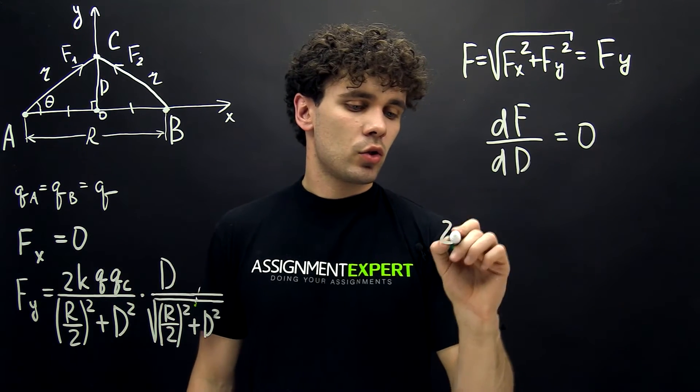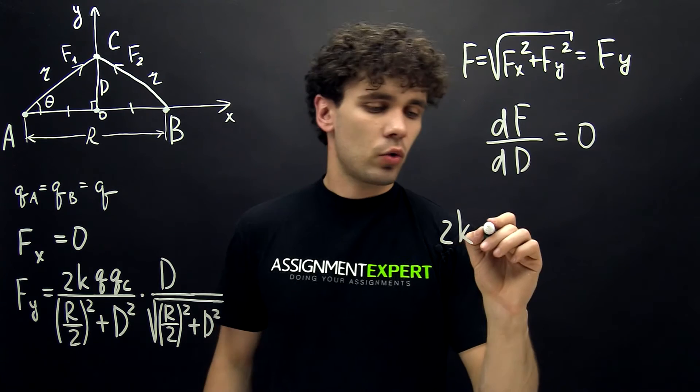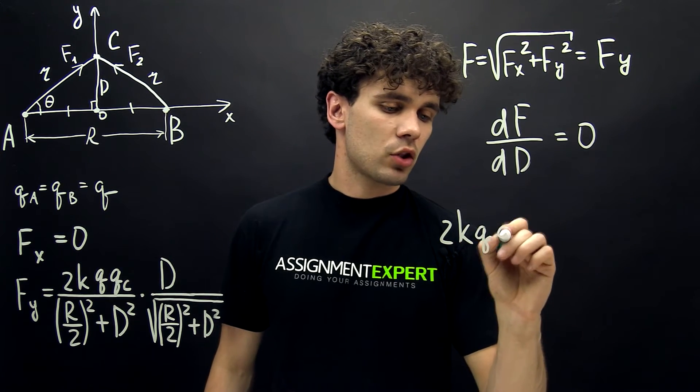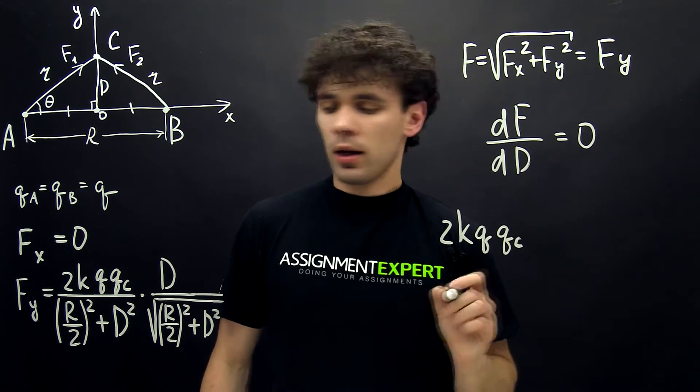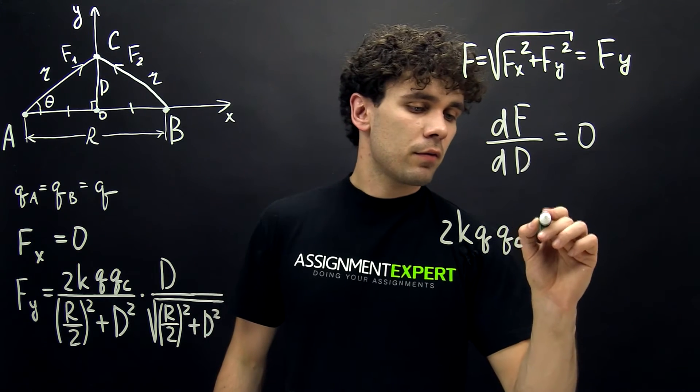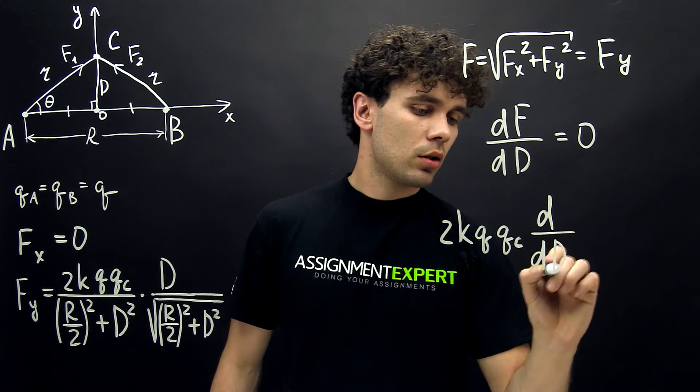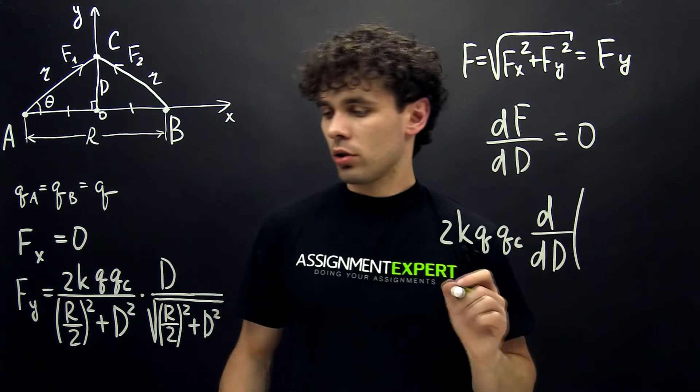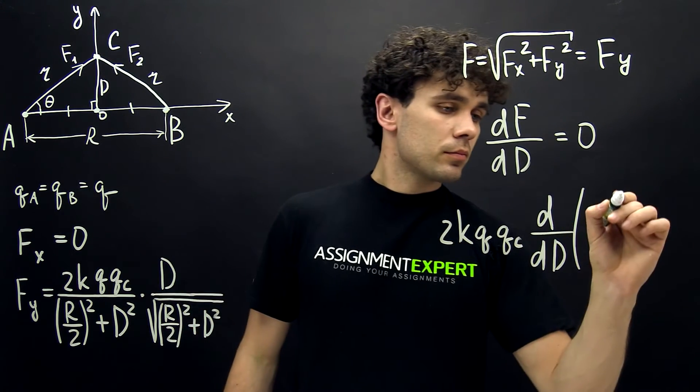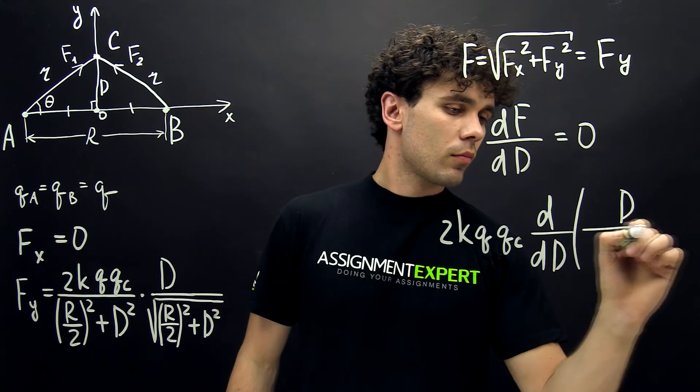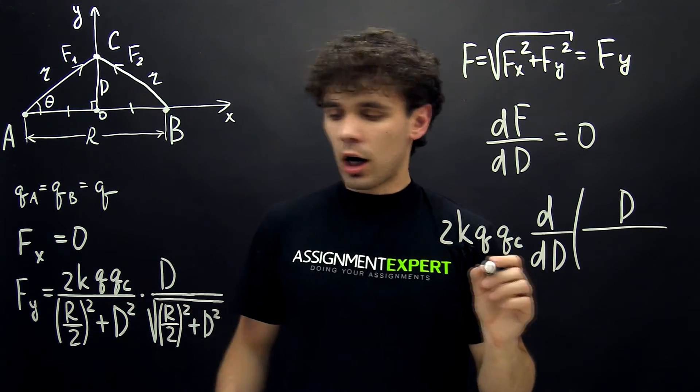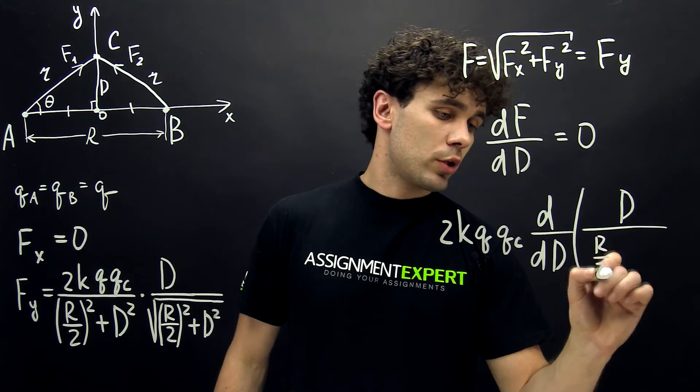And we have 2K times Q times QC, and then we have derivative with respect to D of the expression D over (R over 2) squared,